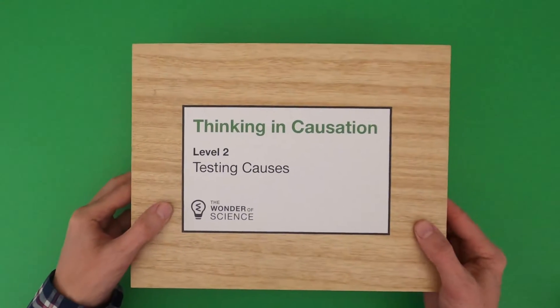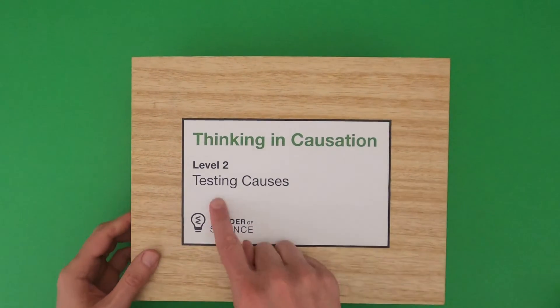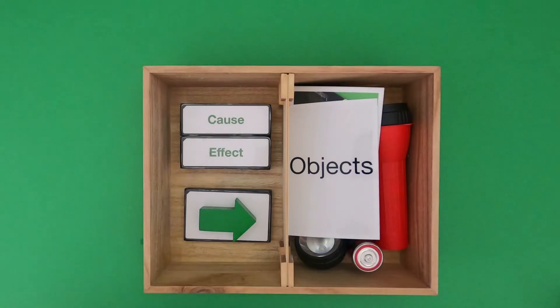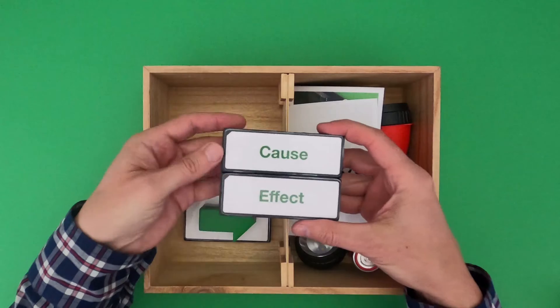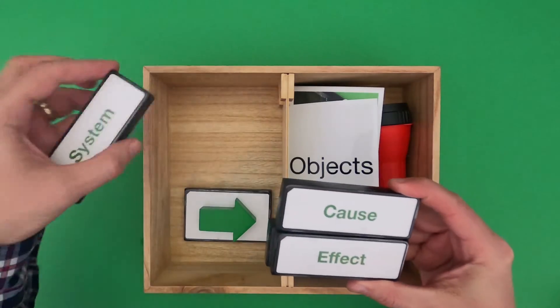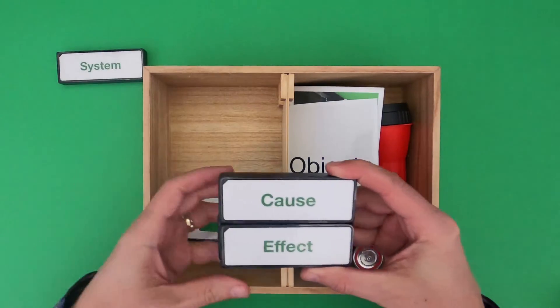Hi, it's Mr. Andersen and this is Thinking in Causation Level 2: Testing Causes. Like in Level 1, when we're dealing with the concept of cause and effect, it's very important that you always start by defining the system that you're going to investigate.